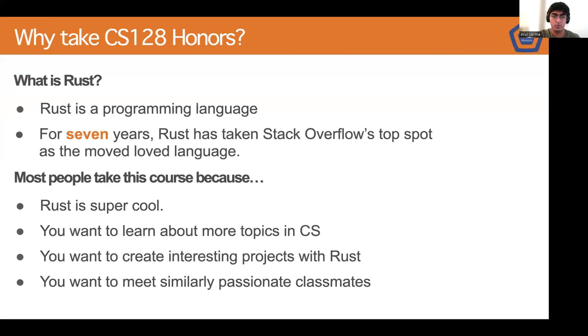So let's start by talking about what Rust is, and why you should take CS128 Honors. So Rust is a C++-adjacent programming language. In other words, it's a very low-level, very high security programming language, focused on memory management and low-level latency. For seven years, Rust has taken Stack Overflow's top spot as the most loved and most popular programming language.